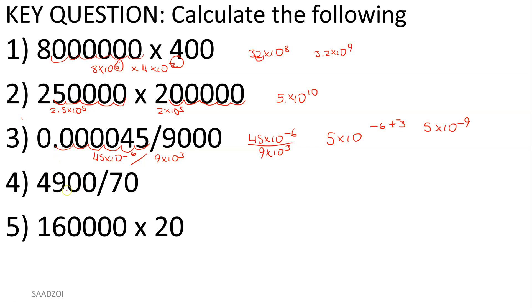Next division example: keep the top number as two digits — 49 times 10 to the second, divided by 7 times 10 to the first. What's 49 divided by 7? That's an easy number to deal with — it's 7. Subtract the exponents: 2 minus 1, no negatives involved. So the answer is 7 times 10 to the first.